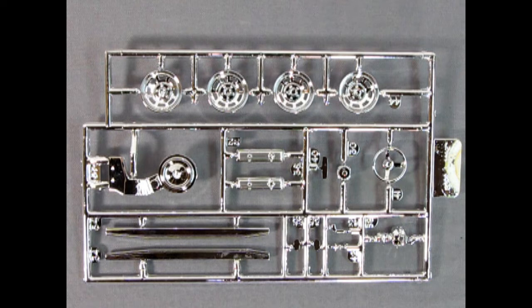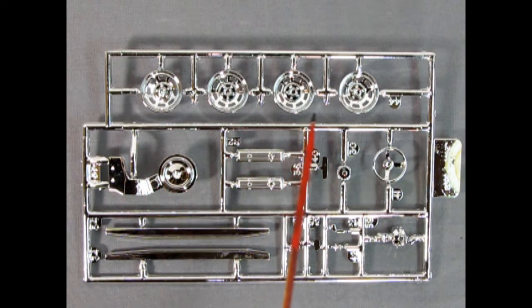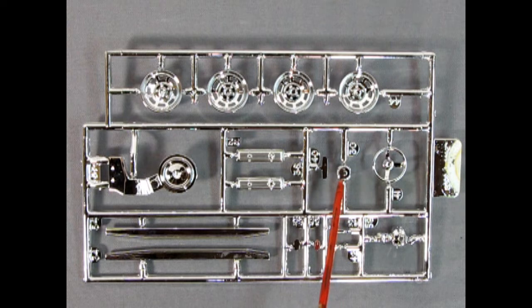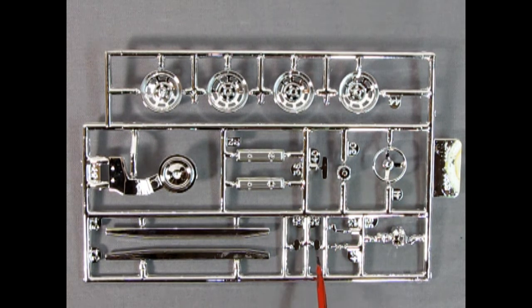Here we have our chrome parts tree and we've got our side rocker chrome as well as the valve covers. There's our air cleaner and those wonderful Corvette wheels. Then we have our alternator. There's the rear view mirror, our chrome plated steering wheel, the side mirrors,